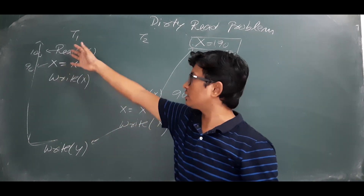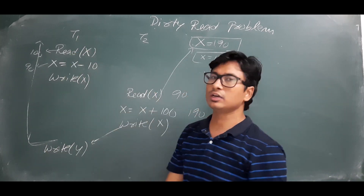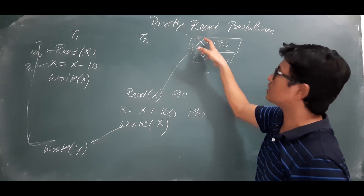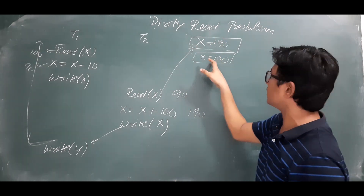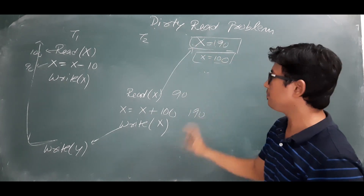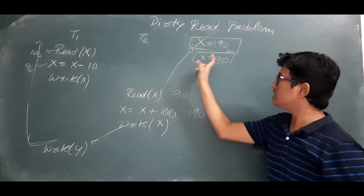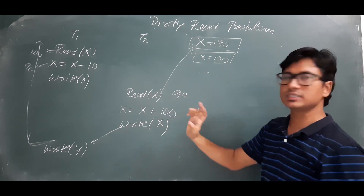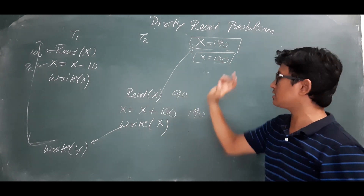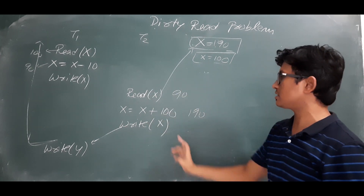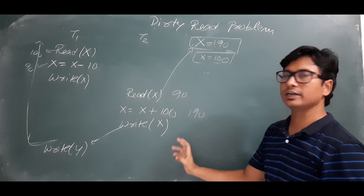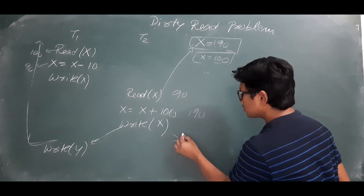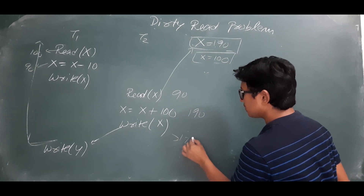Now consider what should have happened if transaction T1 was not there and initially x value is 100. T2 would have read x as 100, then x equals x plus 100, so it would have written x as 200.